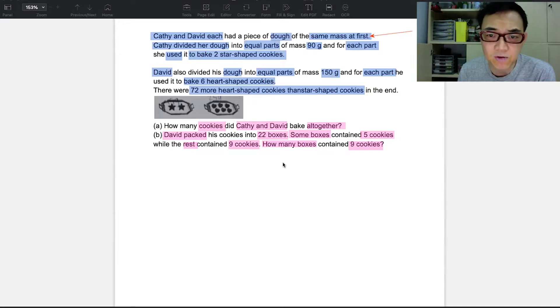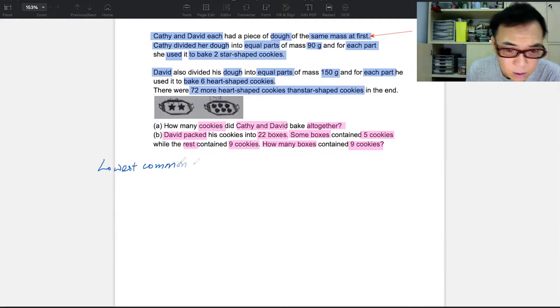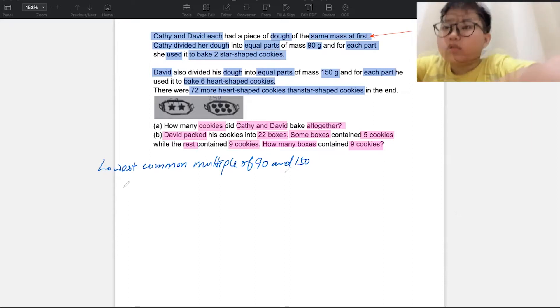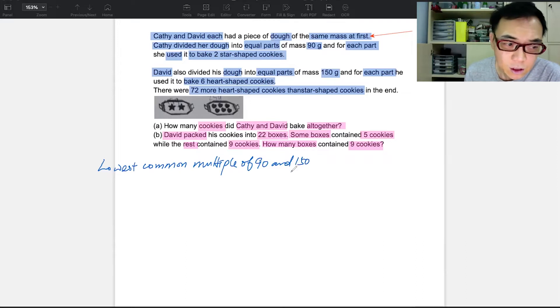What is the lowest common multiple of 90 and 150? Lucas, you should know this. The lowest one is actually, if you take 90 times 5 and if you take 150 times 3, you will get 450 each. So the lowest common multiple is 450. Let's work with 450 first.